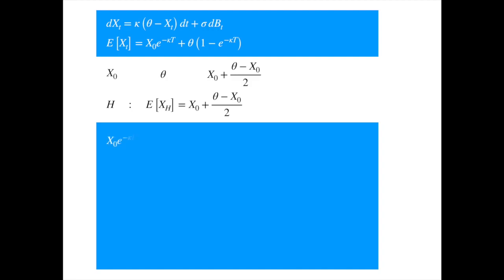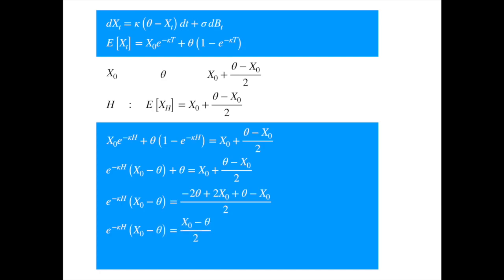Substituting the expression for the mean, rearranging the left-hand side to factor the exponential, moving theta to the right-hand side and combining the terms, simplifying the expression in the numerator, eliminating the common term, taking log of both sides, and isolating H on the left-hand side, we get this simple expression: H = ln(2)/kappa. It depends only on kappa, the speed of mean reversion. The higher the mean reversion speed, the shorter the period needed for the mean to reach the midway point between the current value of the process and its long-term mean.